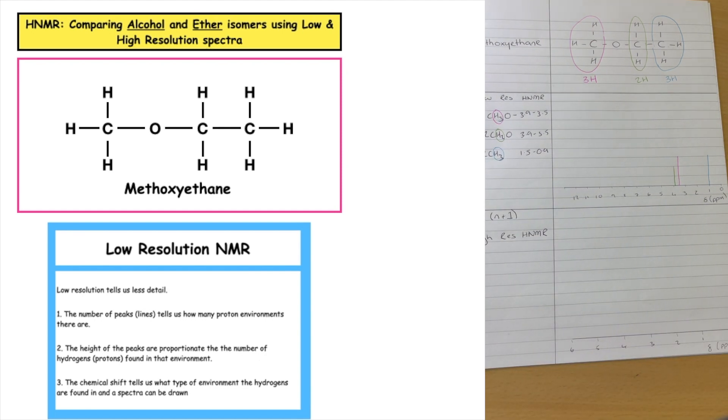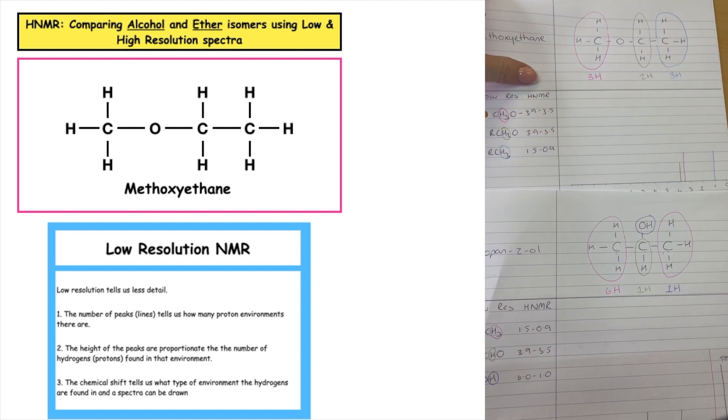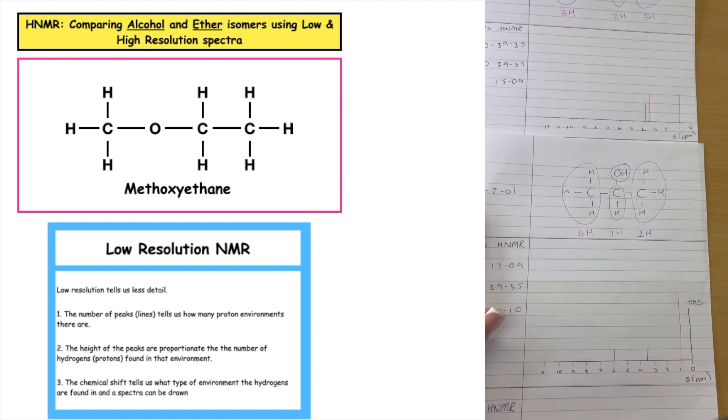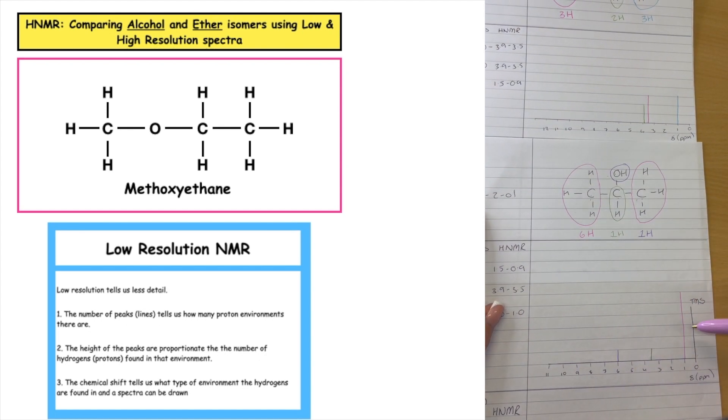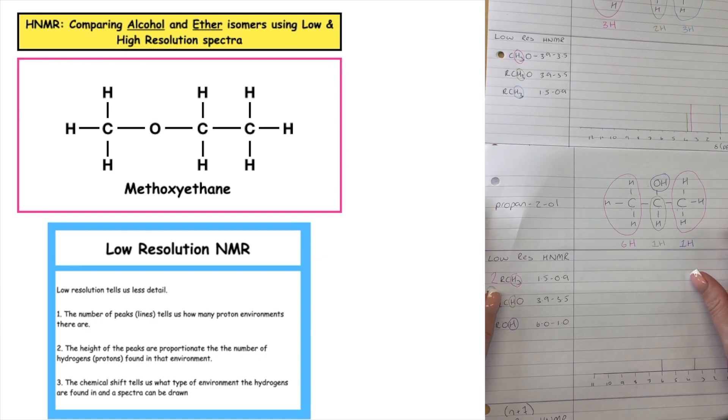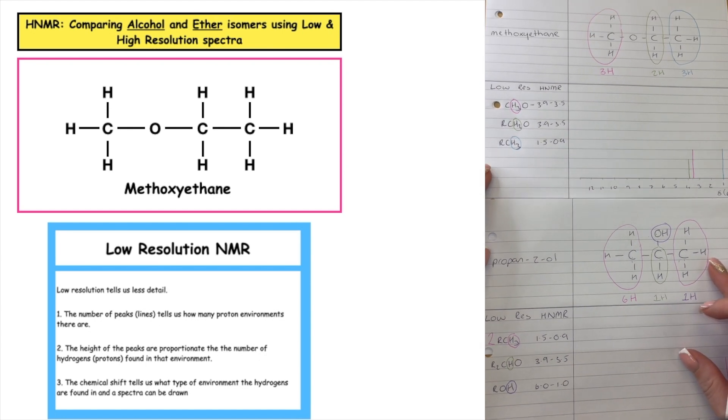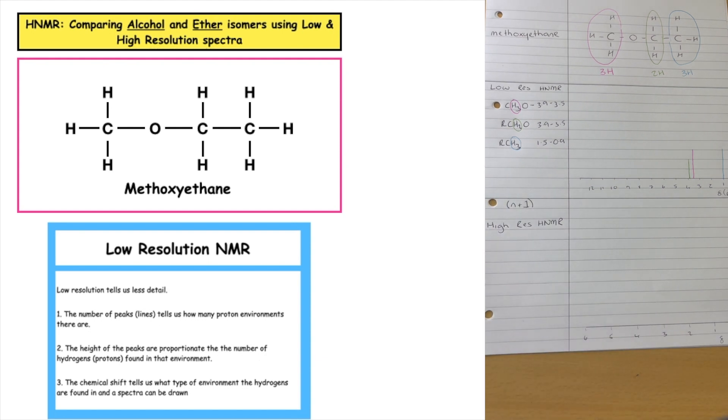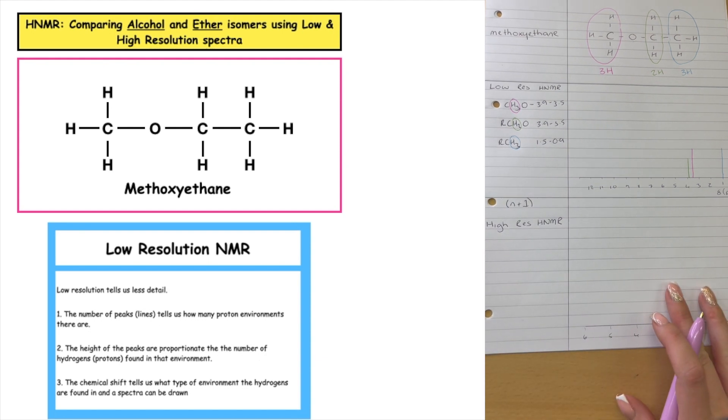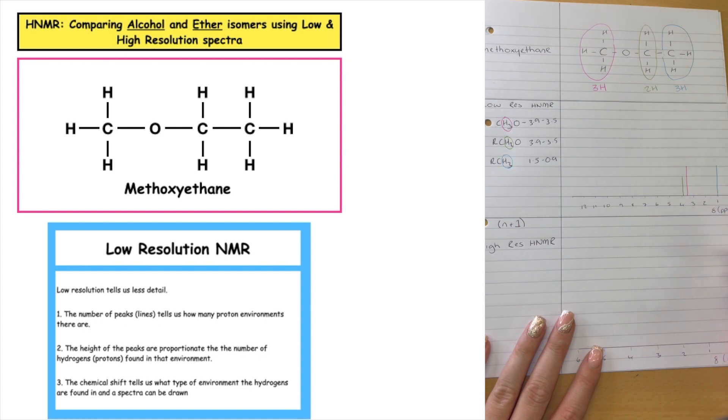So if I compare that back to propane-2-ol, what we can see is that the number of peaks, although we've got the same number of peaks, the chemical shifts are different for those, and the height of the peaks are different as well. And that's due to the number of hydrogens that can be found in that proton environment. So we could probably identify between methoxyethane and propane-2-ol just from the low-resolution HNMR. But what we're going to do to confirm that is we're going to then look at the high-resolution HNMR when we're looking at the splitting of each of our environments.